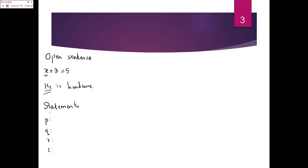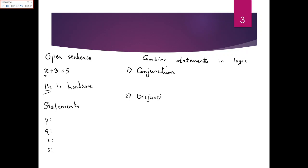Now I want to combine these statements in logic. There are four ways through which I can combine statements: one is conjunction, another is disjunction, then we have implication, and lastly we have double implication. Conjunction uses the symbol AND, disjunction uses the symbol OR, implication means a single arrow, and double implication means a double arrow.